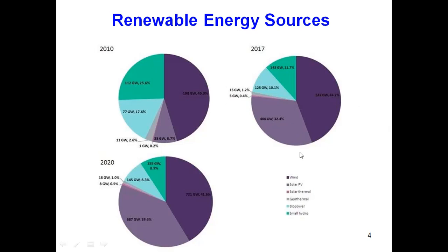The contribution of solar PV increased significantly because in 2010 the technology to fabricate solar panels was not sophisticated and the product cost was very high. By 2017, with advances in micro and nano fabrication technology, low-cost solar panels became available, and solar PV increased from 8.7% to 32.4%.